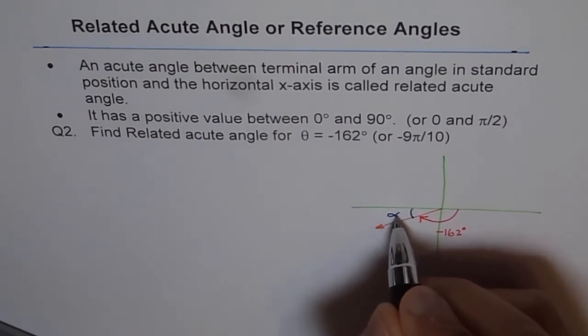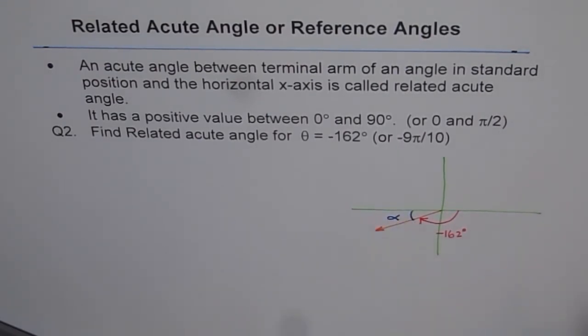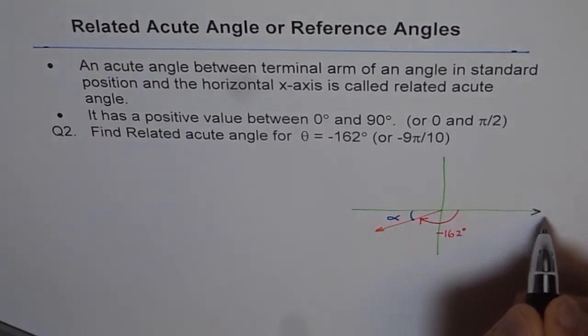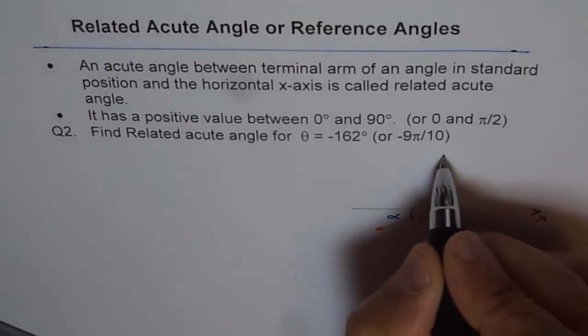Let me call it alpha. So that is the related acute angle. So this is our positive x-axis. That is y.